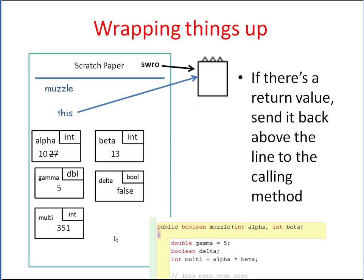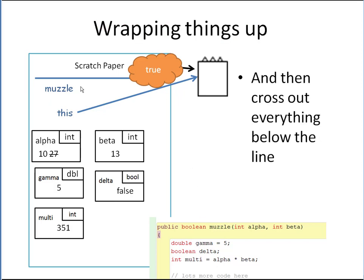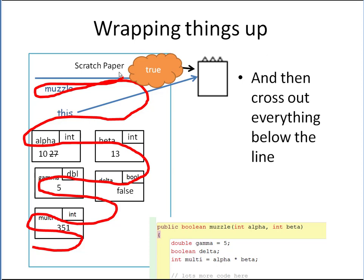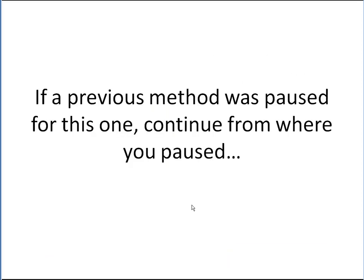The very last step: if you have a return value, you send it back above the line — the only thing that can cross lines are return values. For example, the code at the bottom says 'return true', so true pops up above the line. After returning, you cross out all the local variable entries below the line — it's gone, as though we never did it. And if we had paused a previous method to start this one, we go back to where we left off on that line and keep going from there.